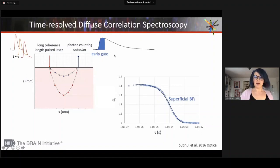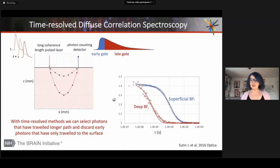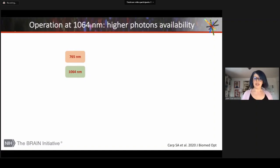When we initially developed this technology, we were using typical wavelengths for DCS. And we realized that for several advantages it's better to move to 1064 nanometer.